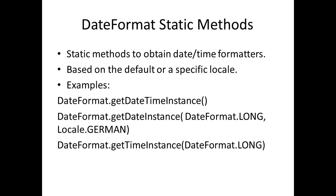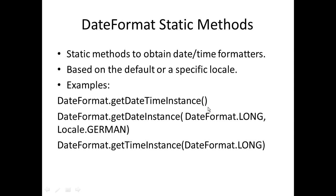DateFormat has several static methods to obtain date-time formatters. These methods are based on either the default or a specific locale. The getDateTimeInstance method with no parameters gives you the default locale formatter, whereas passing a specific locale to it returns the date-time instance for that locale.